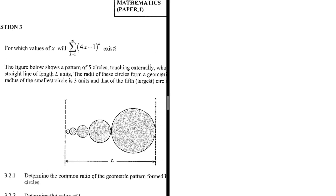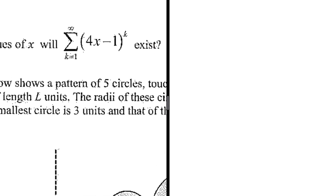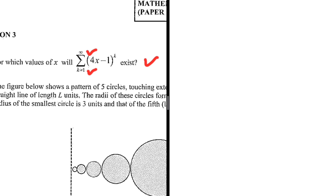For which values of x will this sum exist? What is special about this sum? We are going from k equals 1 to infinity. We can only calculate the sum to infinity if the sum is convergent, because if it is divergent then we can't calculate the sum to infinity as it keeps on increasing.